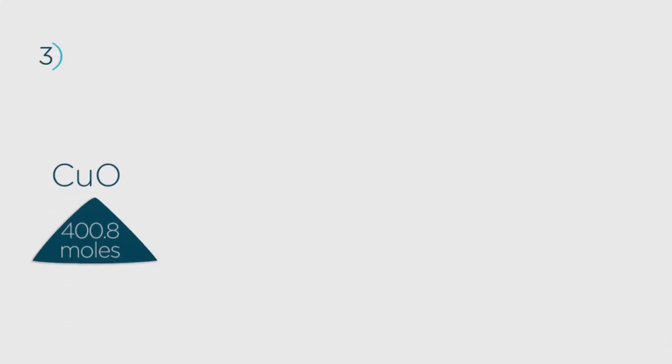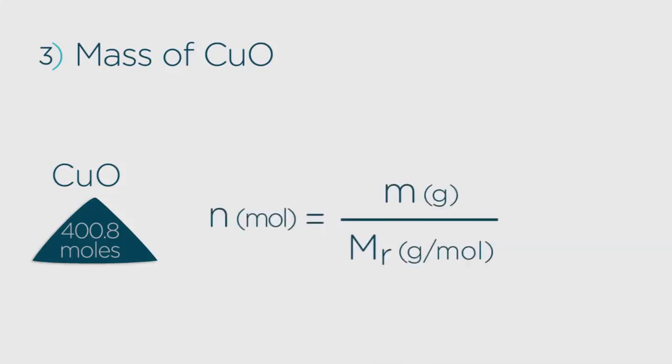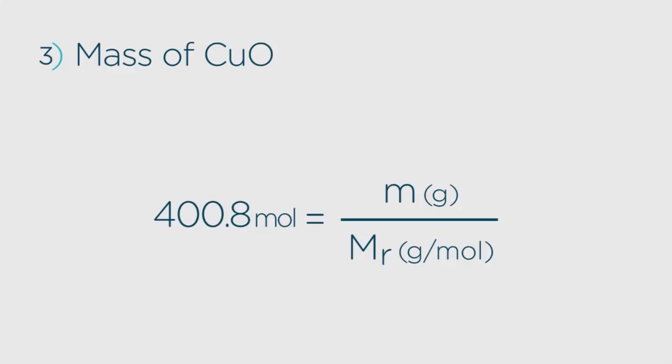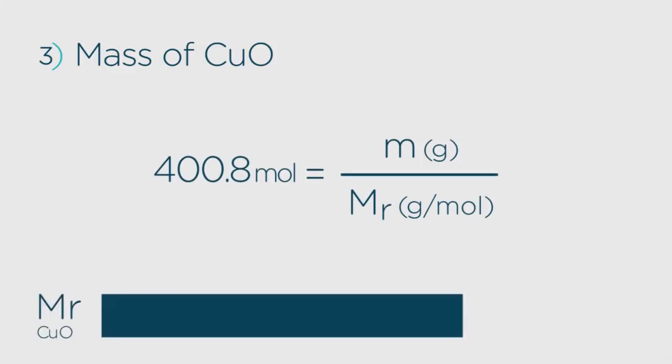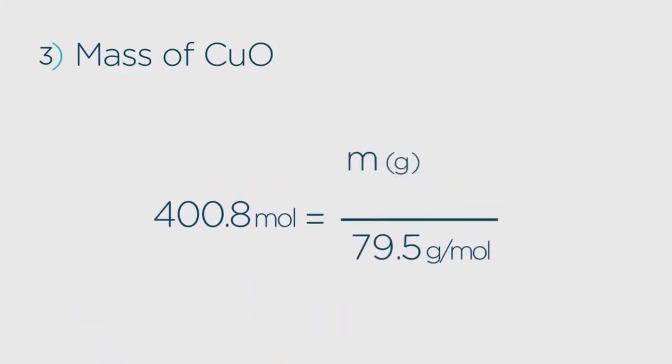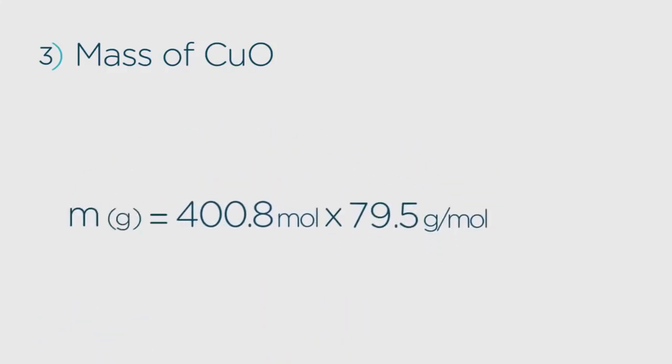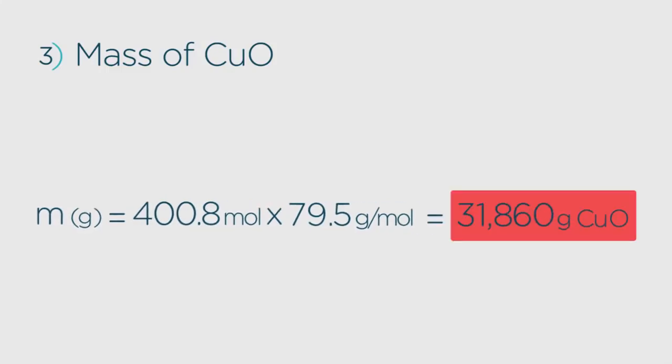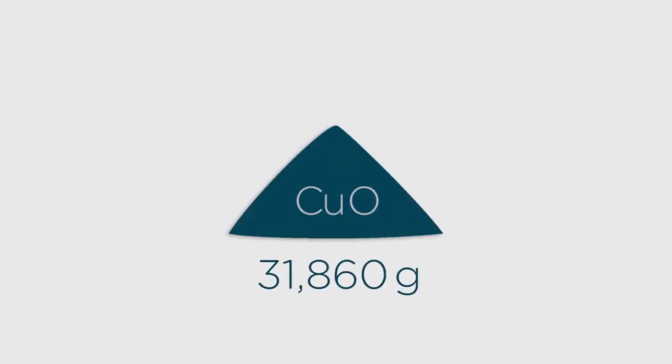Now to convert back to mass, and again this is straightforward, we just have to use the equation again. This time we know the number of moles, 400.8, and we can get the molecular mass of copper oxide, 63.5 plus 16 equals 79.5 grams per mole. To find the mass, only a simple rearrangement is needed. 400.8 times 79.5 equals 31,860 grams of copper oxide. And there you have it, we've solved the problem.